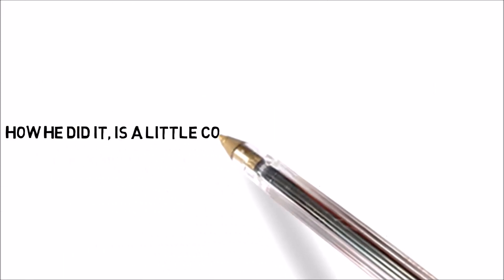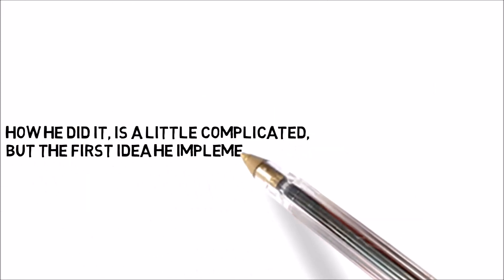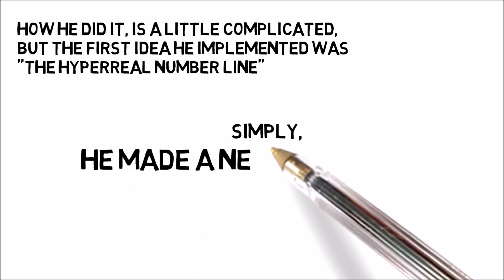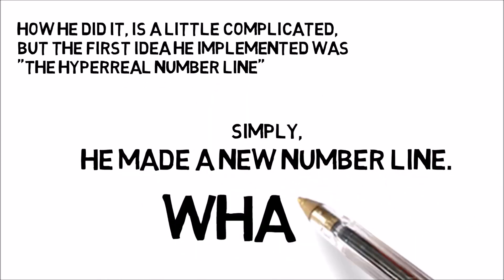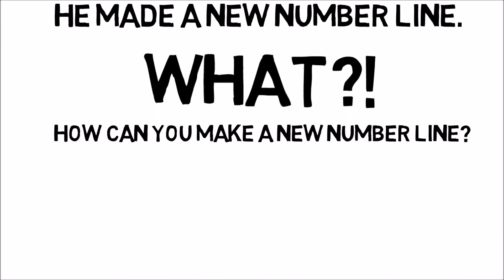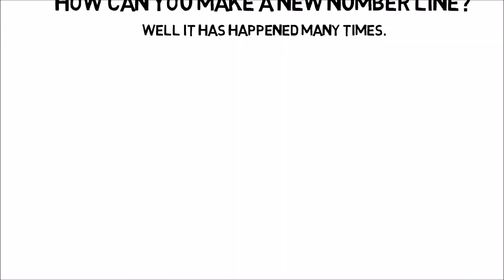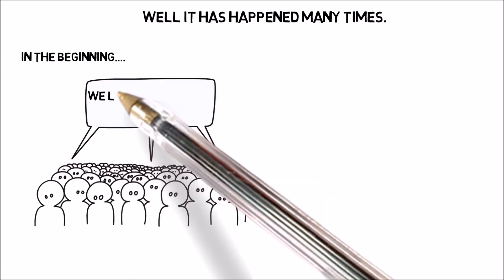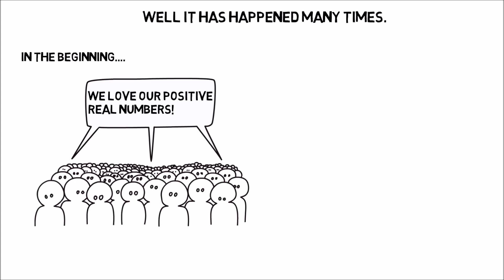How he did it is a little complicated. But the first idea he implemented was the hyperreal number line. Simply, he made a new number line. What? You may ask how can you make a new number line? Well, it has happened many times. In the beginning, we only get positive whole real numbers. 1 sheep, 3 goats, 9 geese.